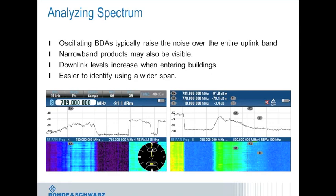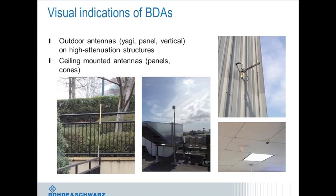Problems occur when insufficient path loss causes signals to loop around, making the BDA oscillate. Oscillating BDAs typically raise the noise floor over their entire operating range, showing up in spectrum as a wide spectral hump — often 10 to 40 MHz wide — possibly with narrowband products within this range. Using a wider spectral span of about 50 MHz makes it easier to recognize an oscillating BDA by shape alone. BDAs can also be detected by looking at the downlink: entering a building with unexpectedly strong downlink signal is often a good sign of BDA use.